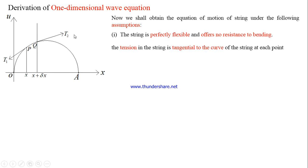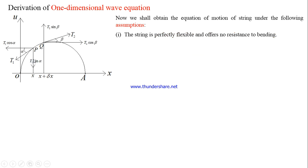Since T1 and T2 are vector quantities, we resolve them into components. If α is the angle T1 makes with the x-axis, then T1 cos α is the horizontal component and T1 sin α is the vertical component. Similarly, if β is the angle T2 makes with the x-axis, then T2 cos β is the horizontal component and T2 sin β is the vertical component.